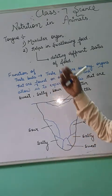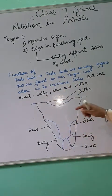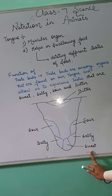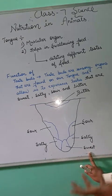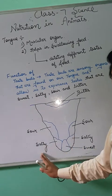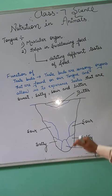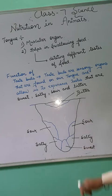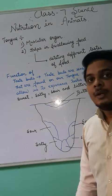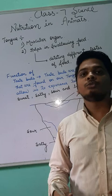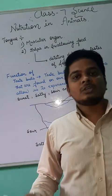The structure of the tongue plays a very important role. The very tip of the tongue helps us to know if the food is sweet or not. The corner sides of the tongue detect salty taste, above that is sour, and at the back of the tongue it is used to taste bitter.